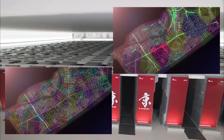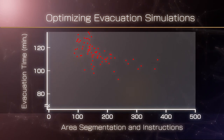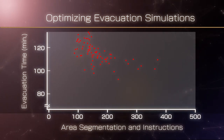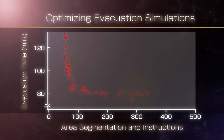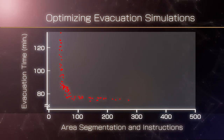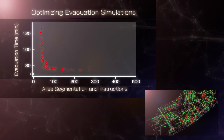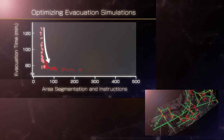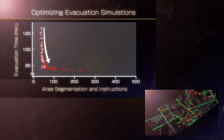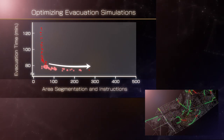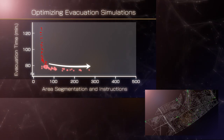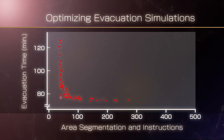Let's put these results into a graph. The horizontal axis shows how detailed the segments and instructions are; the vertical axis is the time required for evacuation. As simulations were repeated to search for the optimal solution minimizing both time and instructions, the marks converged into an L-shape. This result shows that segmentation and instructions need to be detailed enough to shorten evacuation time, but if the instructions are too detailed, the evacuation time is not decreased any further.